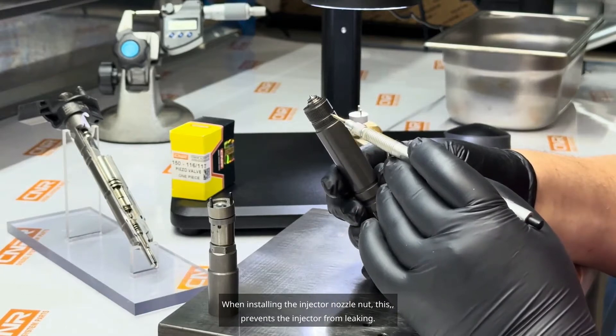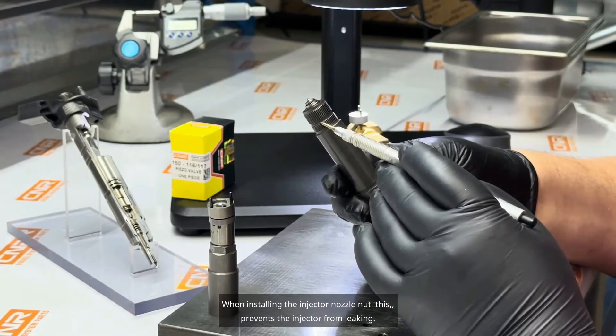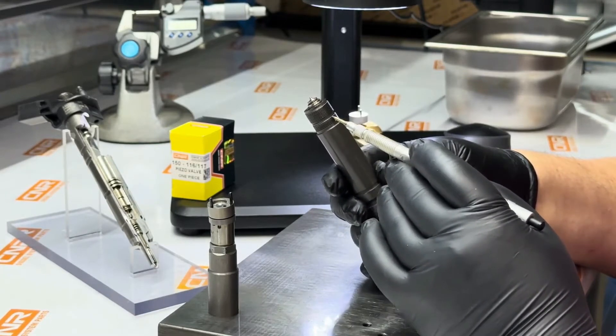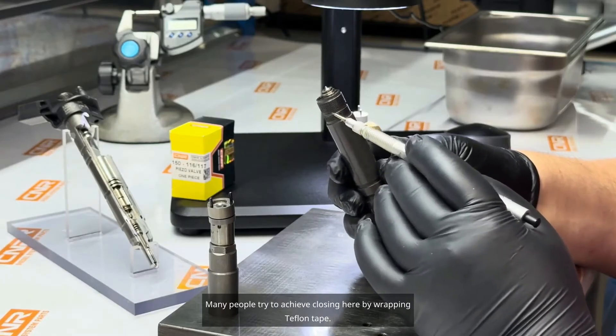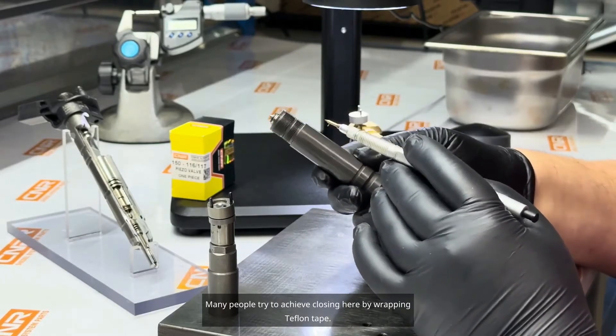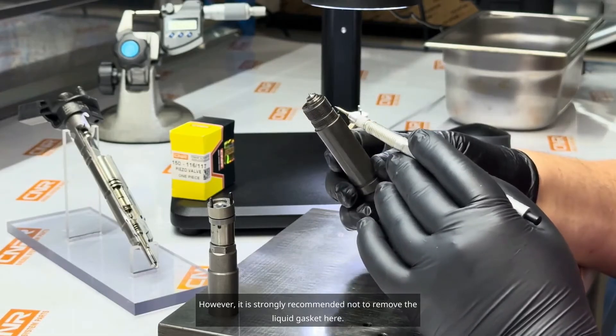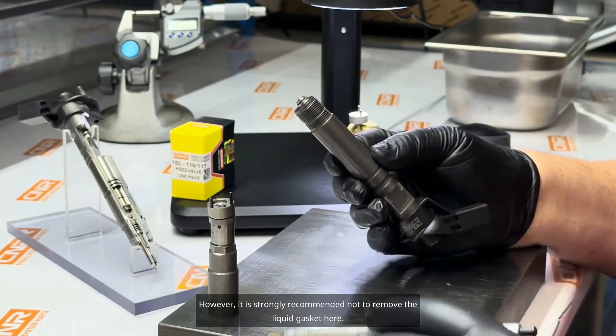When installing the injector nozzle nut, this prevents the injector from leaking. Many people try to achieve closing here by wrapping Teflon tape. However, it is strongly recommended not to remove the liquid gasket here.